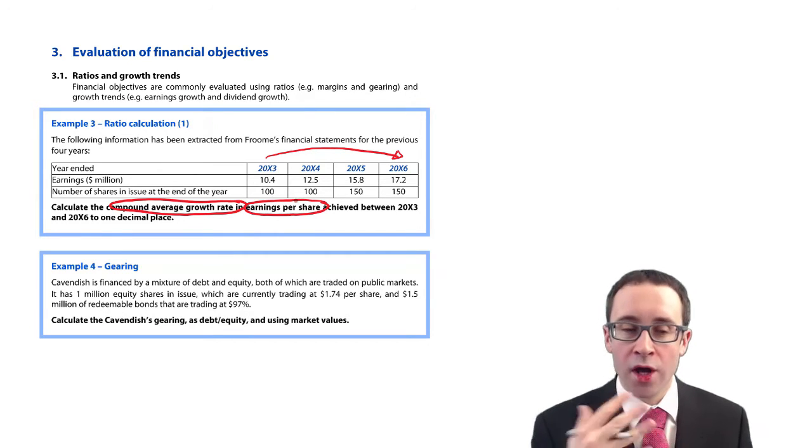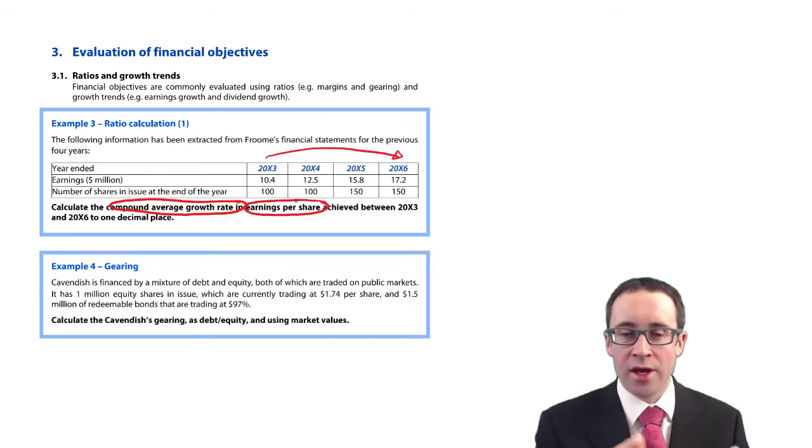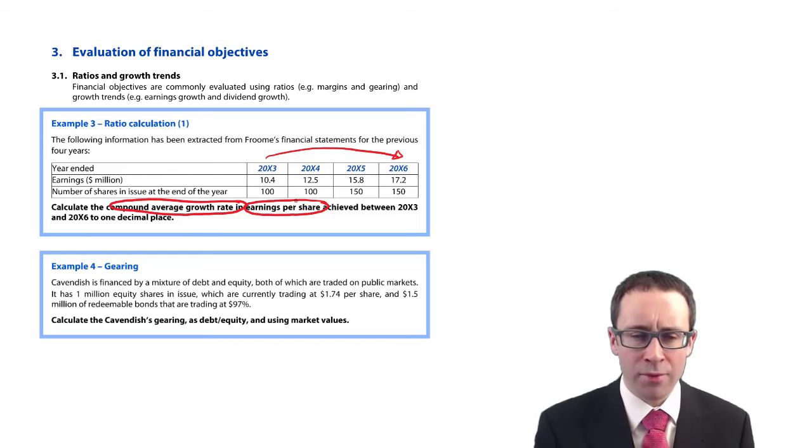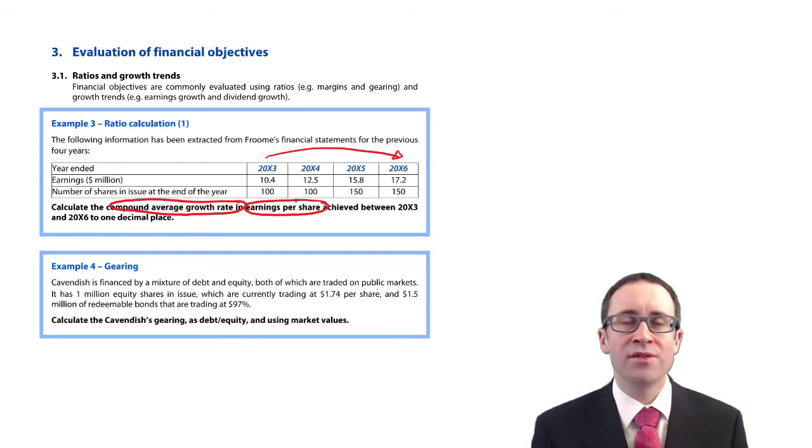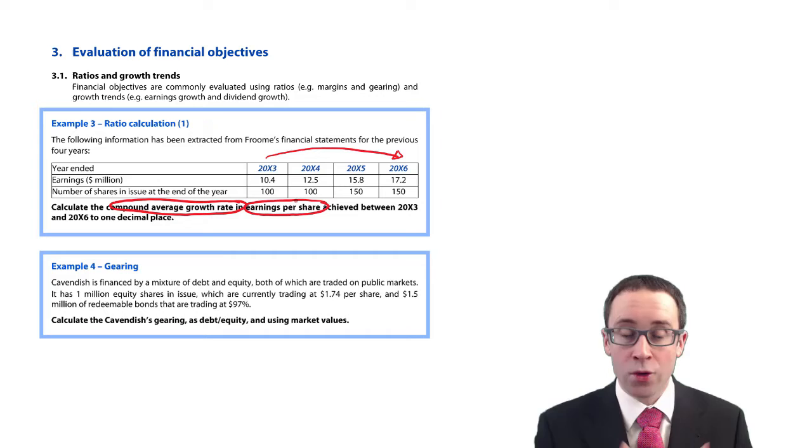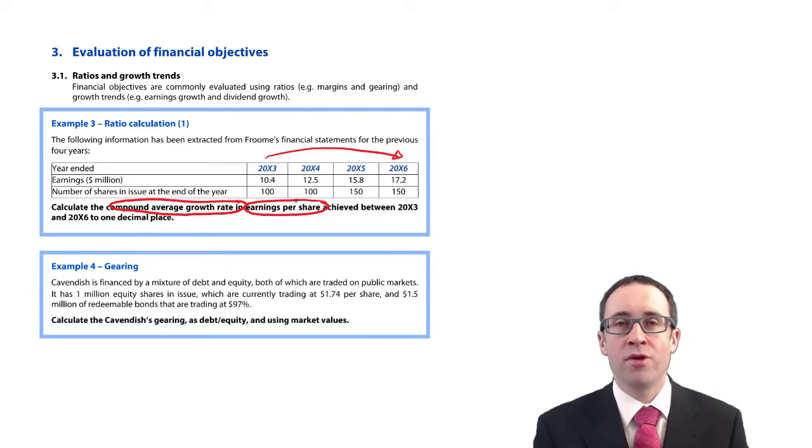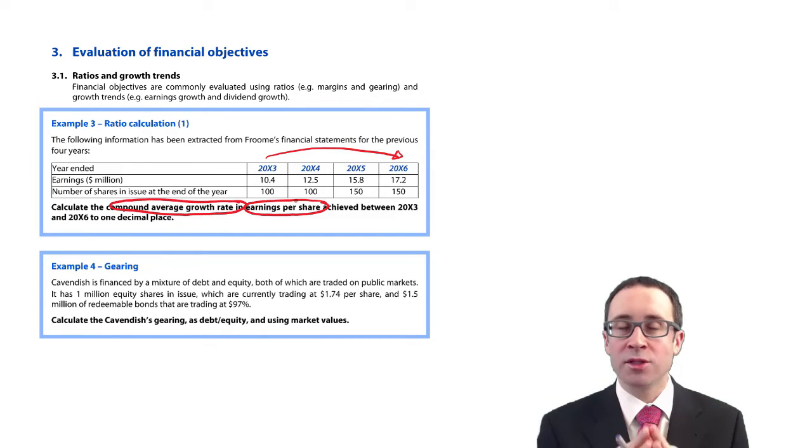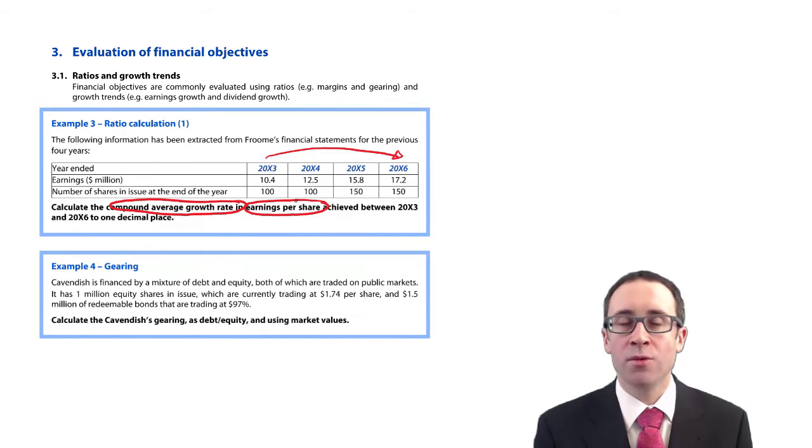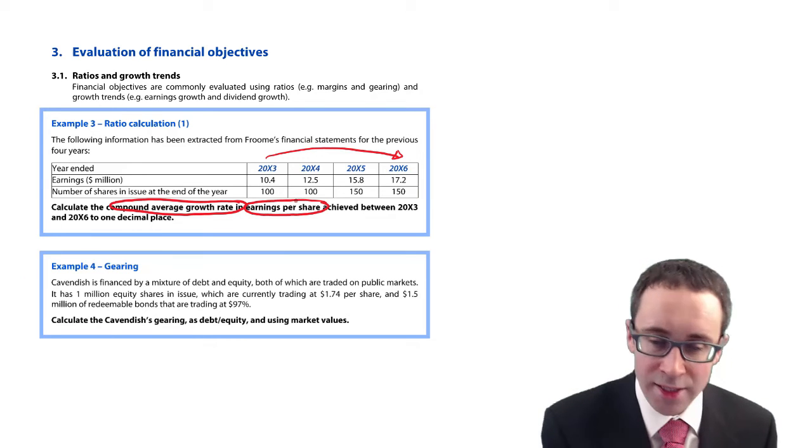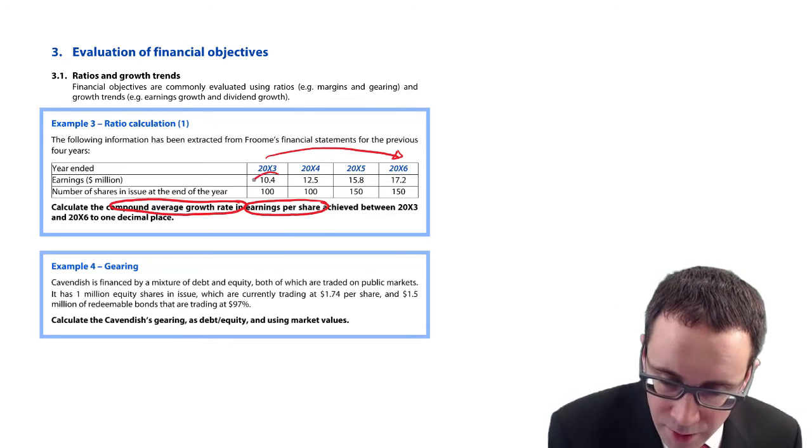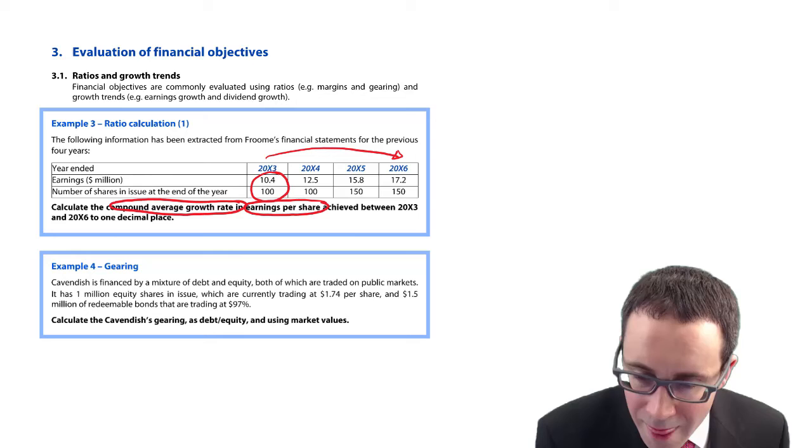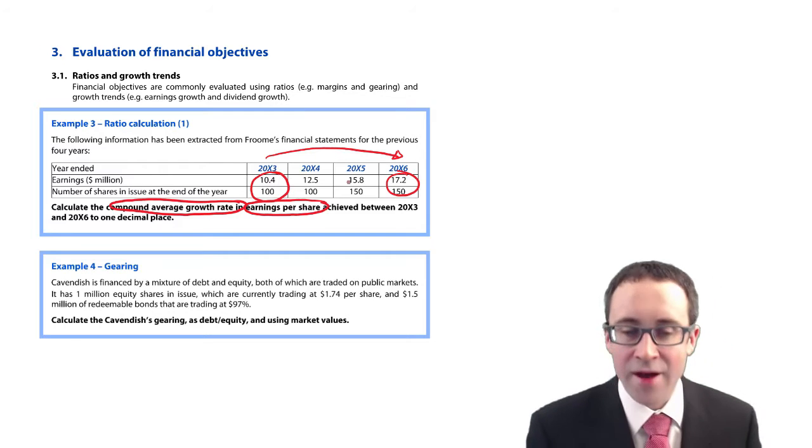The key bit within this question is that it's looking at your growth in your earnings per share, not in your earnings. Your earnings have grown from $10.4 million up to $17.2 million, but it's looking at your earnings per share. You need to work out your earnings per share for X3 and for X6.